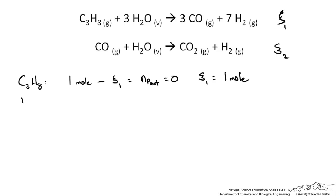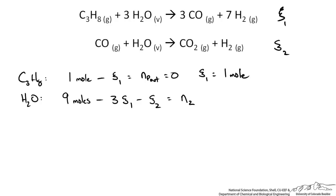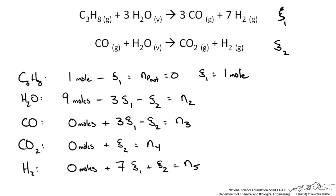For water: 9 moles enter, minus 3 times ψ₁, minus ψ₂, gives the moles of water leaving (N2). Completing the species balances for all other species follows the same approach. Unfortunately, we cannot solve for ψ₂ from material balances alone, since we have no information about conversion, yield, or selectivity in the reactor.